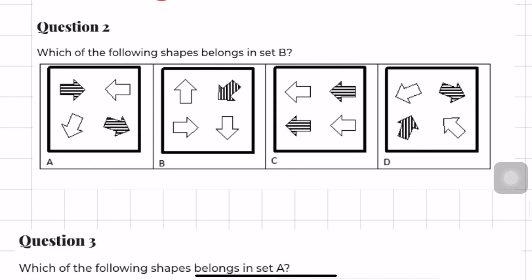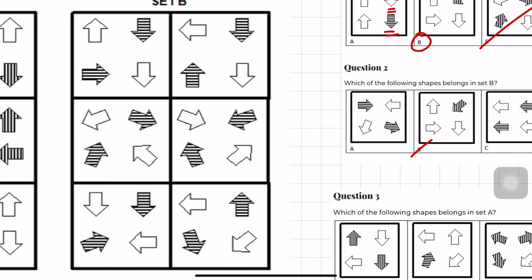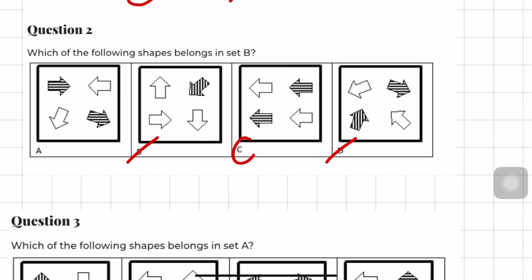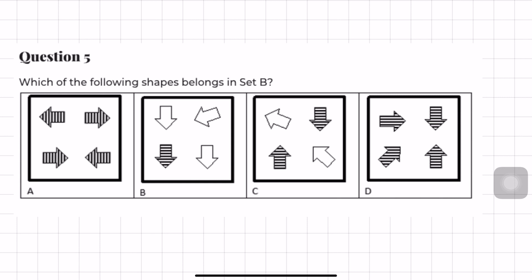For the next question — which shape belongs in set B? — we can cancel out B and D since D has vertical bars. To discriminate between A and C: they look identical except A has the first and fourth corner filled whereas C has the second and third. Looking at set B, it always has shapes filled in the second and third corners, so the answer is C. For question 3, we need an odd number of shapes with vertical bars, so the answer is C. For question 5, we need an even number with horizontal bars in the second and third corners — again C.